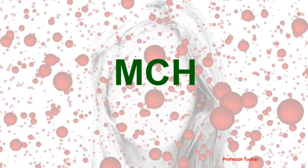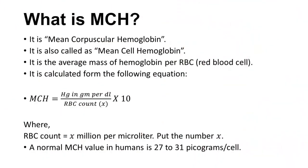Now let us understand MCH. MCH stands for Mean Corpuscular Hemoglobin, also called Mean Cell Hemoglobin. It is the average mass of hemoglobin per RBC. It is calculated from the following equation: MCH equals hemoglobin in grams per deciliter divided by RBC count, multiplied by 10. RBC count is X million per microliter — only put the number X in the equation. A normal MCH value in humans is 27 to 31 picograms per cell.